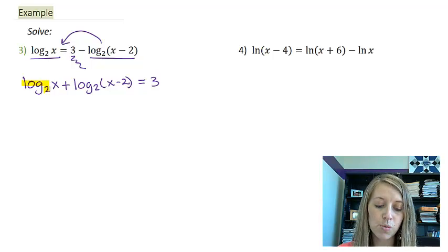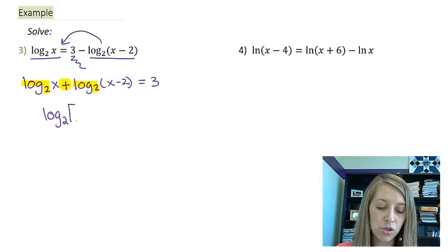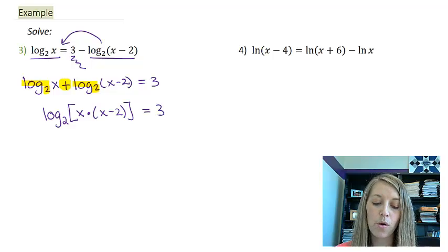If we have log functions with the same base that are added, then I can use my products property and put these in the same log function. So this is log base 2 of x times x minus 2, and that is still equivalent to 3.